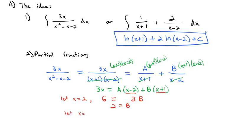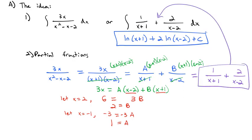We can do the same thing on the other factor. Let x equal negative 1 because that makes the last factor equal to 0. Then 3 times negative 1 is negative 3, equals A times negative 1 minus 2, which is negative 3. Dividing both sides by negative 3, we find A equals positive 1. So back on our original fractions, we have 1 over x plus 1 plus 2 over x minus 2 — the fraction that is much easier to integrate than the original. That's what partial fractions does: break up a hard fraction into smaller pieces.